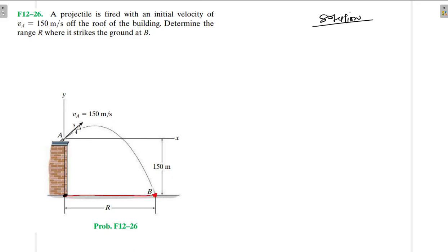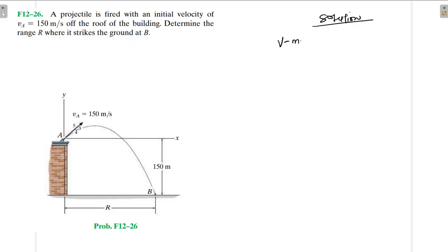Before we find the distance, let us remind ourselves of the equations that govern motion in this particular case, where we have constant acceleration. The acceleration is g, which is the acceleration due to gravity, and it only acts on this object in the vertical direction. So we are going to have two sets of equations: vertical as well as horizontal.